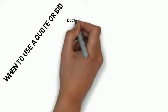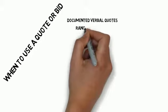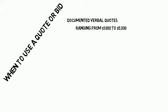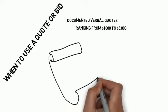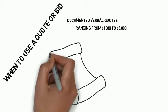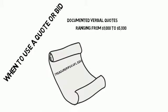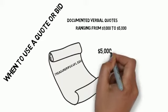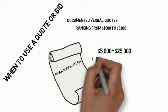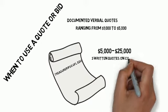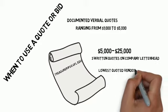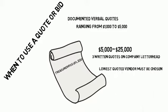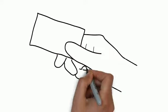When to use a quote or bid to make a purchase: UF purchasing requires documented verbal quotes for materials or services that have competitive markets ranging from $1,000 to $5,000. The verbal quote is documented by an email from you to SG Finance at treasurer@sg.ufl.edu. Between $5,000 and $25,000, three written quotes on company letterheads are required. The lowest quoted vendor must be chosen unless there are extenuating circumstances as documented in the email.